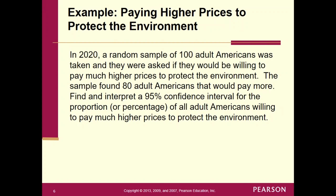Here's our problem. In 2020, a random sample of 100 adult Americans was taken and they were asked if they would be willing to pay much higher prices to protect the environment. The sample found 80 adult Americans that would pay more. Find and interpret a 95% confidence interval for the proportion of all adult Americans willing to pay much higher prices to protect the environment.